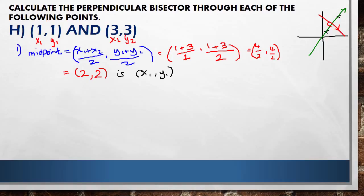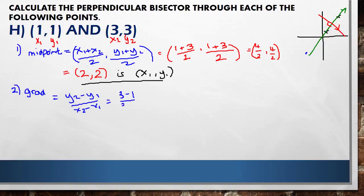The second part: we calculate the gradient or slope of this line. We use the gradient formula y2 minus y1 over x2 minus x1. Taking my second y coordinate minus my first, over my second x coordinate minus my first: that gives me 2 over 2, which equals 1. That gives us the gradient of the original line.